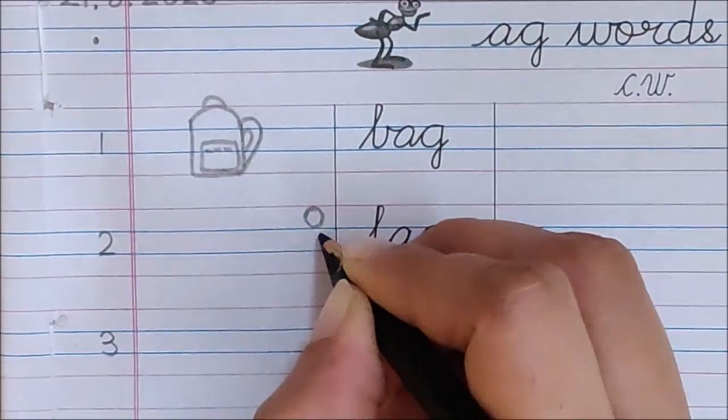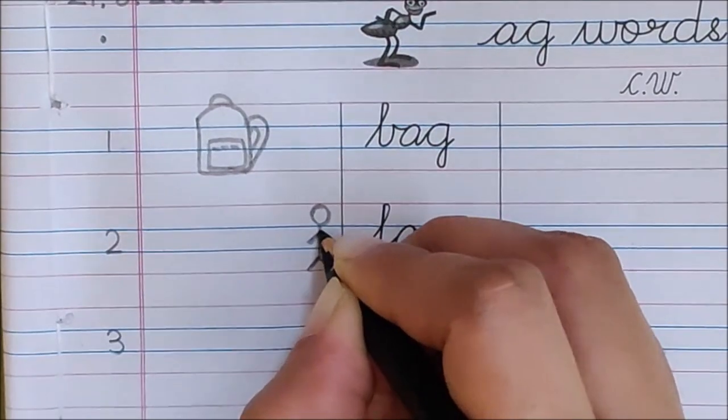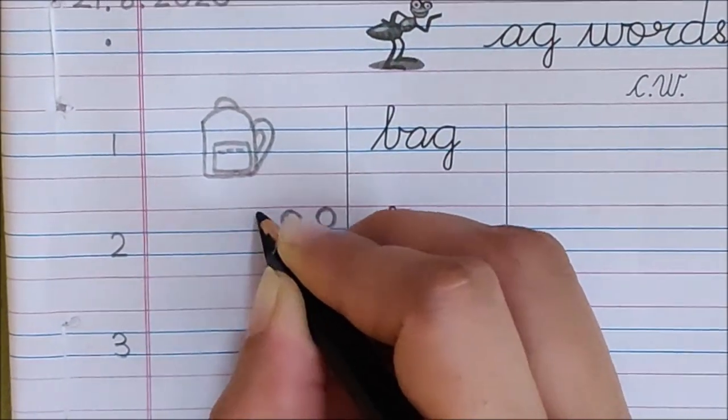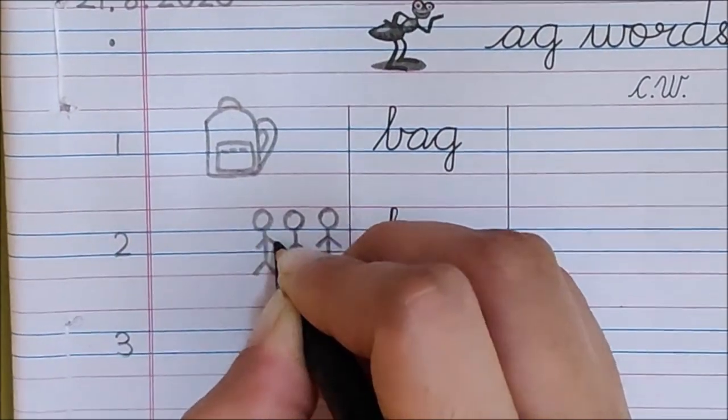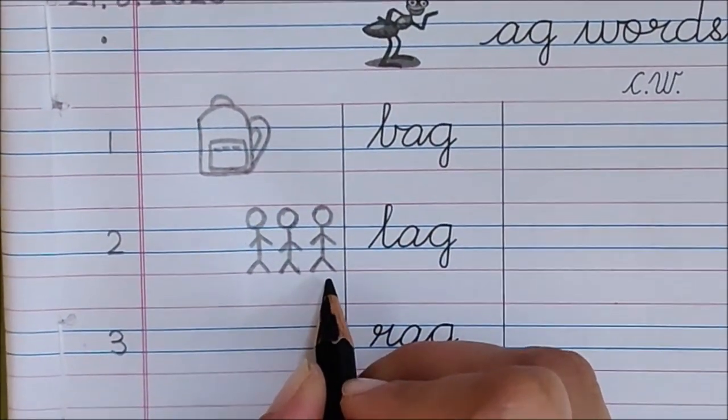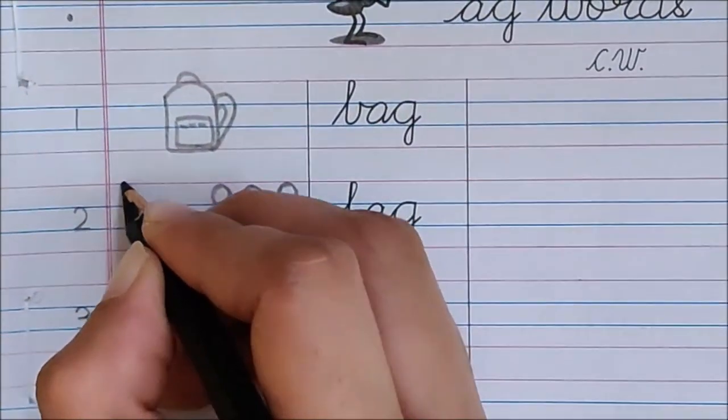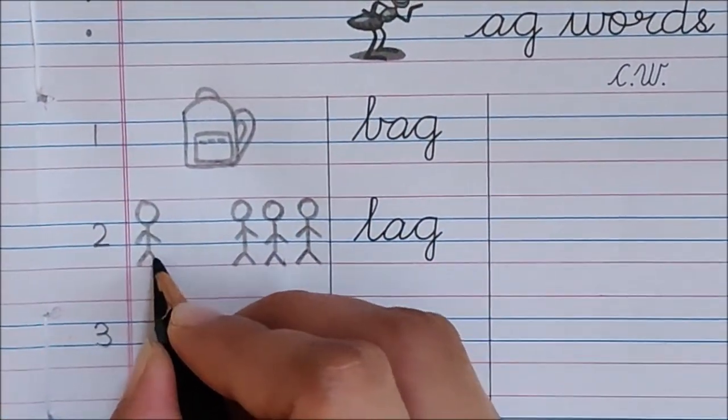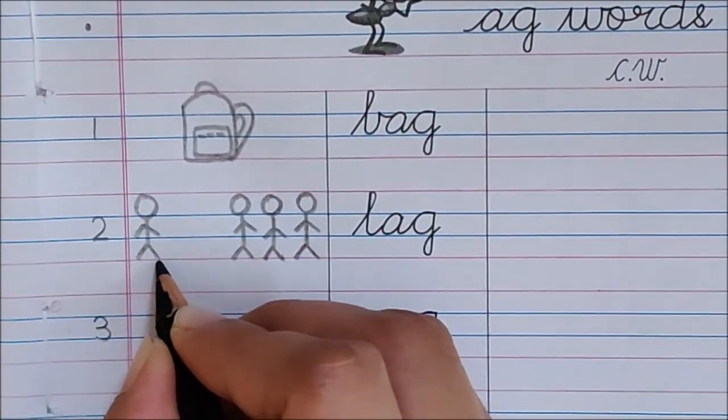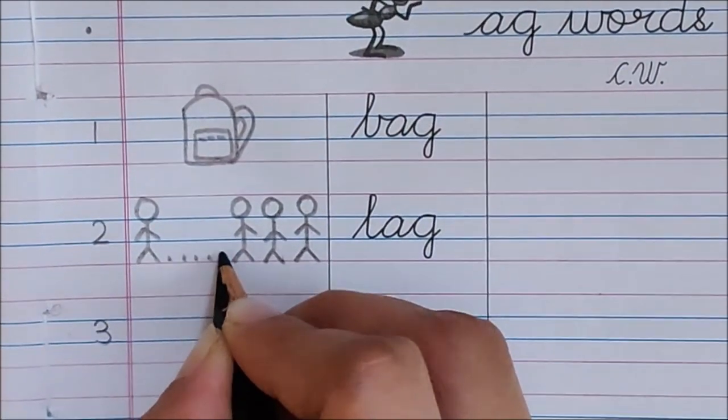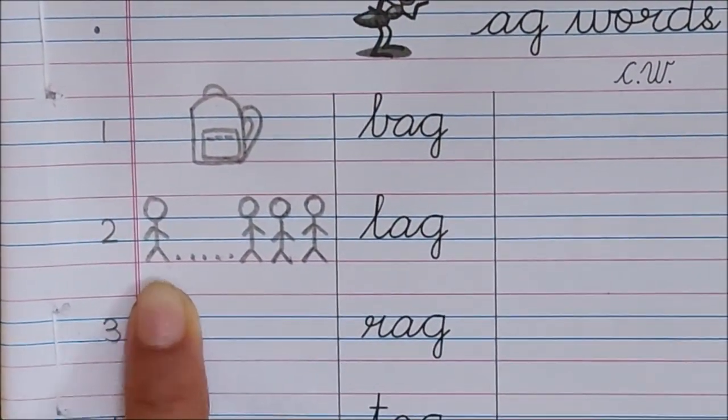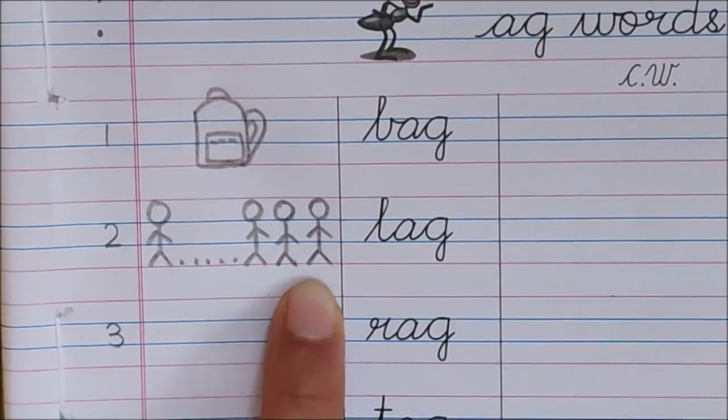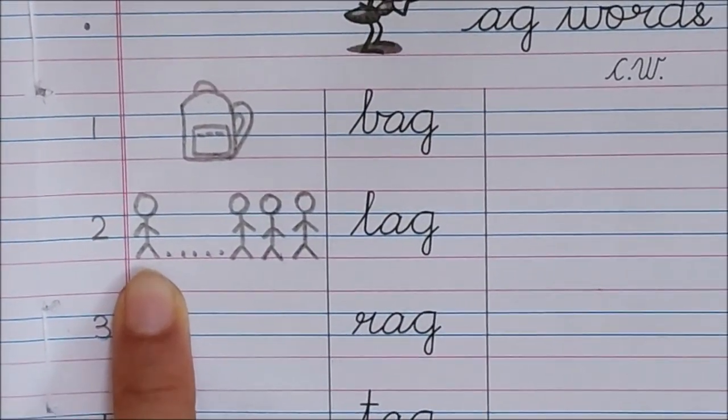See children. There are some children here. 1, 2, 3. Three children are going for their dance class. But one child is very behind. See, he is so behind. Three children are in front and he is so far. So, this child is lagging behind. Matlab, wo peechhe hai. Bohut peechhe hai. Yeh 3 children toh aange hai. Par yeh child bohut peechhe hai. He is lagging.